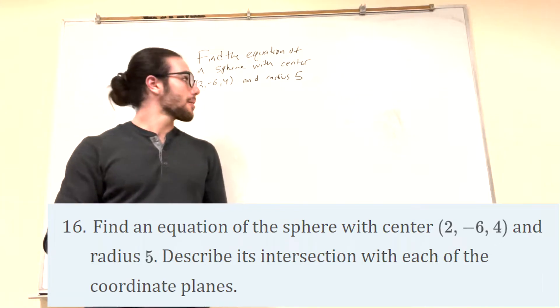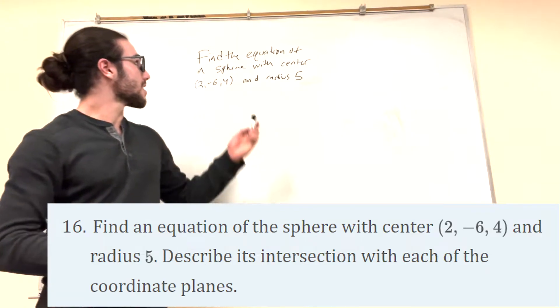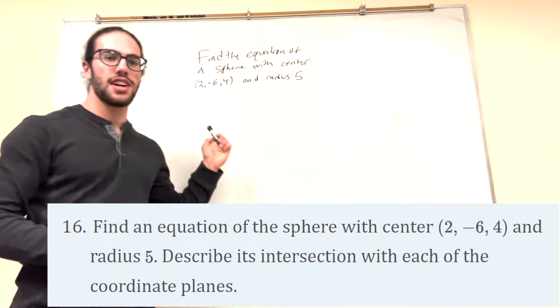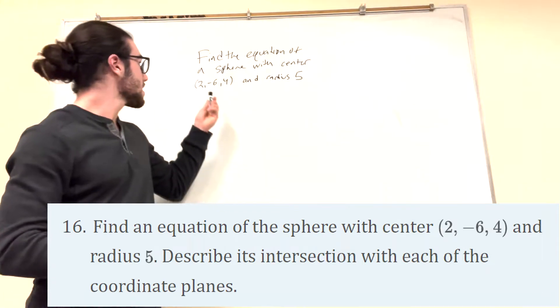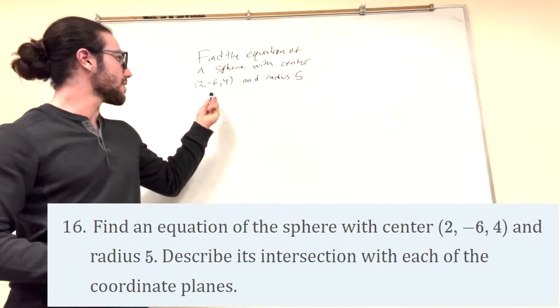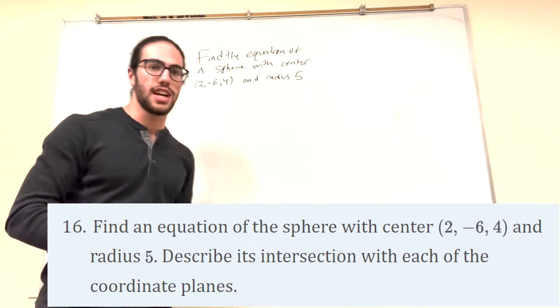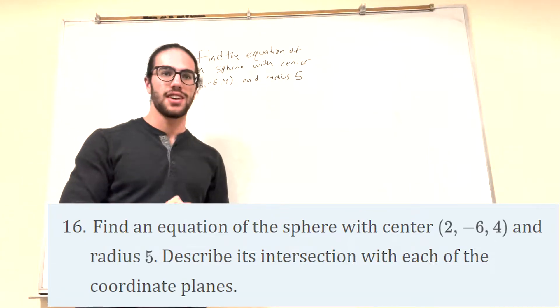What's up, Cal gang? Today we're going to be finding the equation of a sphere with a center at (2, -6, 4) and a radius of 5.